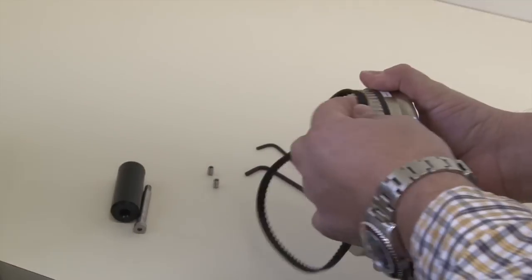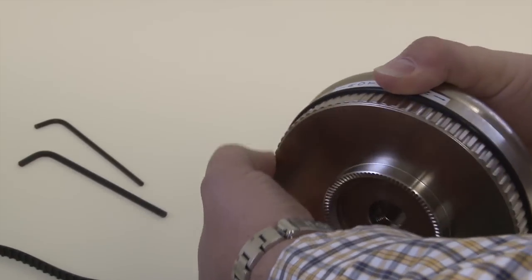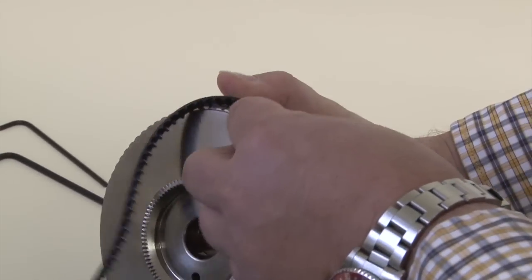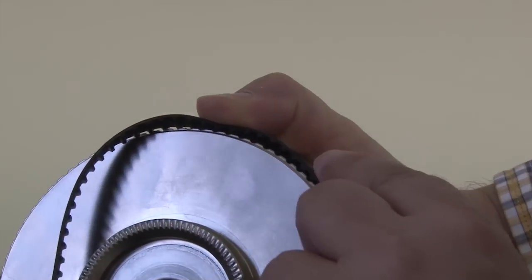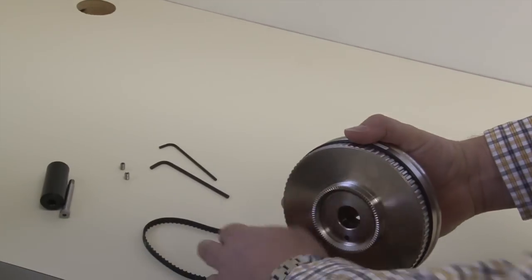We have precisely cut teeth for the XL timing belt so that we get gripping without slippage between the belt and the flywheel.